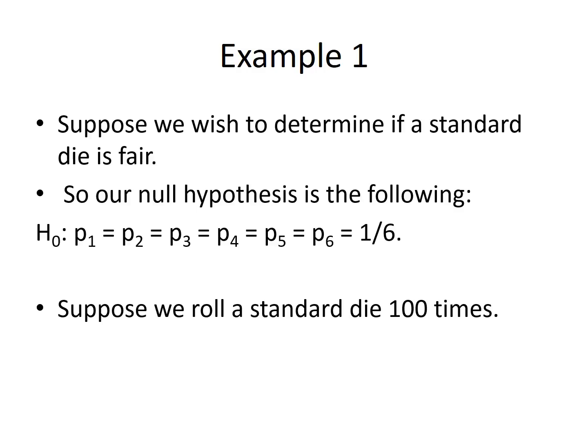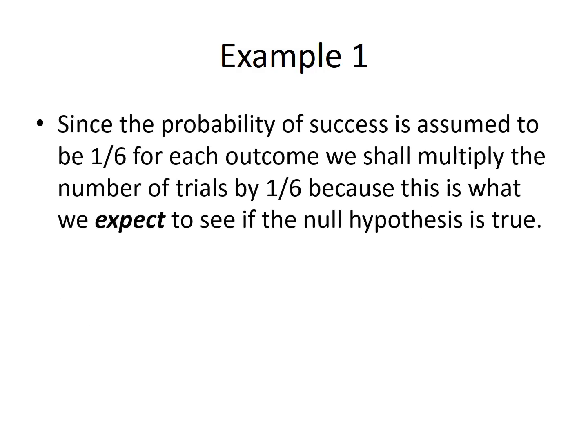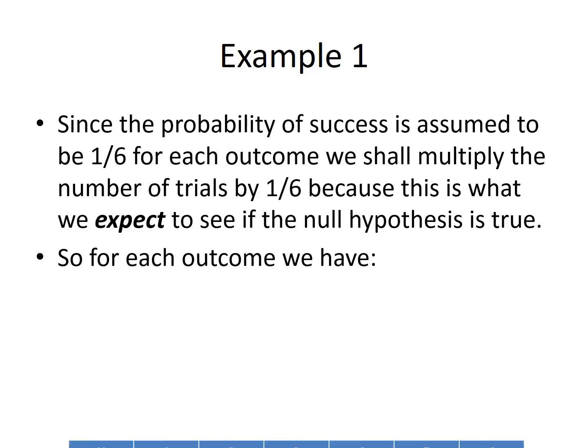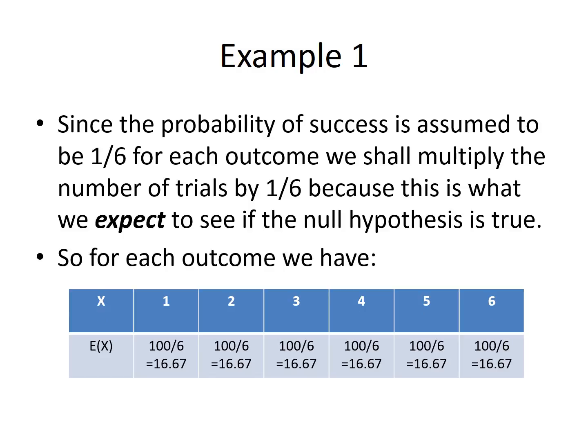Suppose we roll this standard die 100 times. Since the probability of success is assumed to be 1/6 for each outcome, we shall multiply the number of trials by 1/6, because this is what we expect to see if the null hypothesis is indeed true. So for each outcome, we have the following table. Each result is about 16.67%.